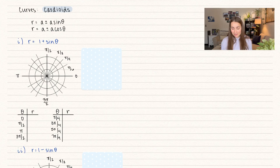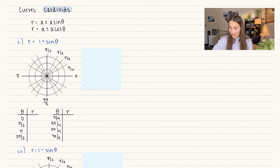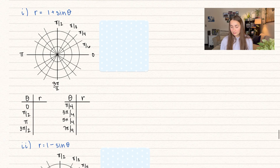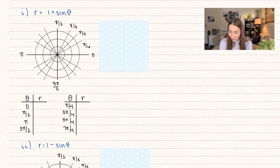So here we see our first example: r is equal to 1 plus sine of theta. We're going to talk about the general form of these shapes and also how we can practice graphing it out. I always suggest graphing it out just by plotting points, just like we do when learning about x and y curves — when we're working with parabolas, we learn how to graph by plotting points.